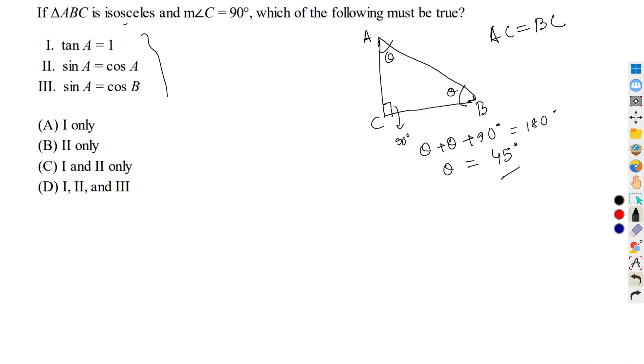Therefore, tan A equals 1. It is correct because tan 45 is 1. A is 45, B is also 45. We have sin A equals cos A because sin 45 is 1 by root 2 and cosine 45 is also 1 by root 2. Therefore this is also correct. We have sin 45 and cosine 45, so this is also correct. Therefore 1, 2, 3, all the options are correct. Therefore D is the correct choice.